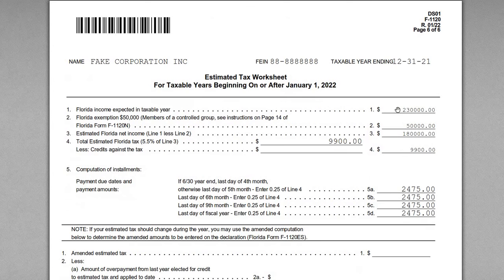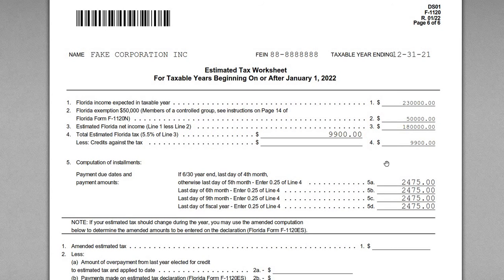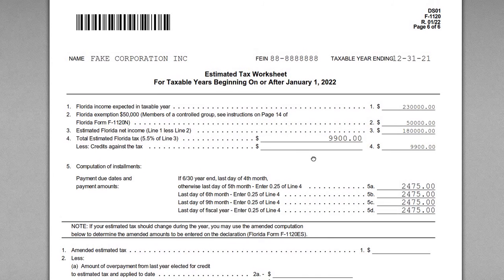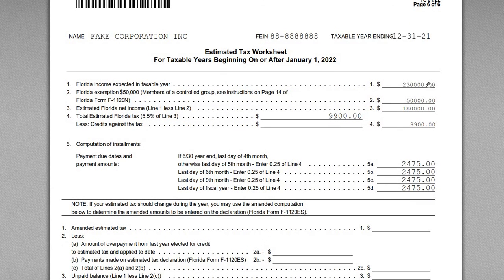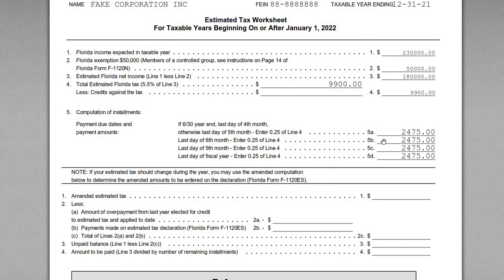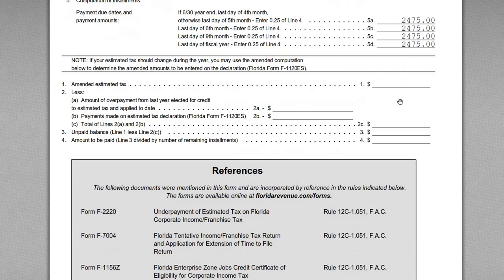The last page is the estimated tax worksheet. If you're a Florida corporation anticipating more than $2,500 in tax for the period, you must make estimated tax payments. In this worksheet, we estimate next year's Florida net income at $230,000, with the full $50,000 exemption since we'll be a full-year taxpayer, giving estimated Florida net income of $180,000. The worksheet then calculates the estimated Florida tax owed and breaks out the quarterly estimated payment amounts.